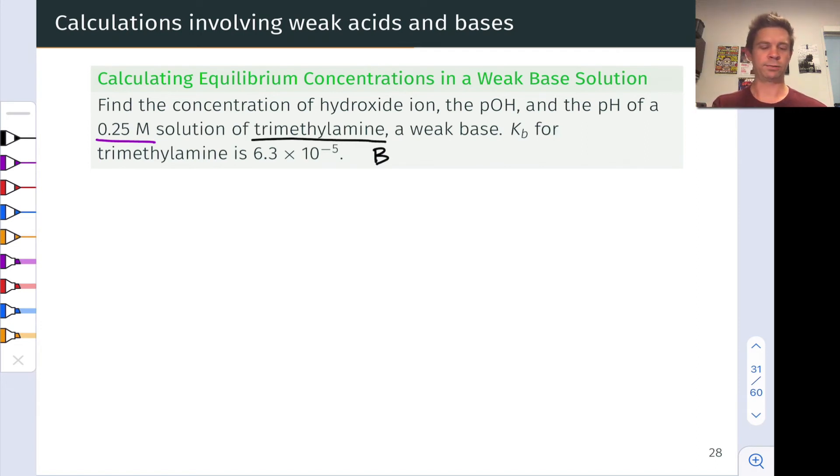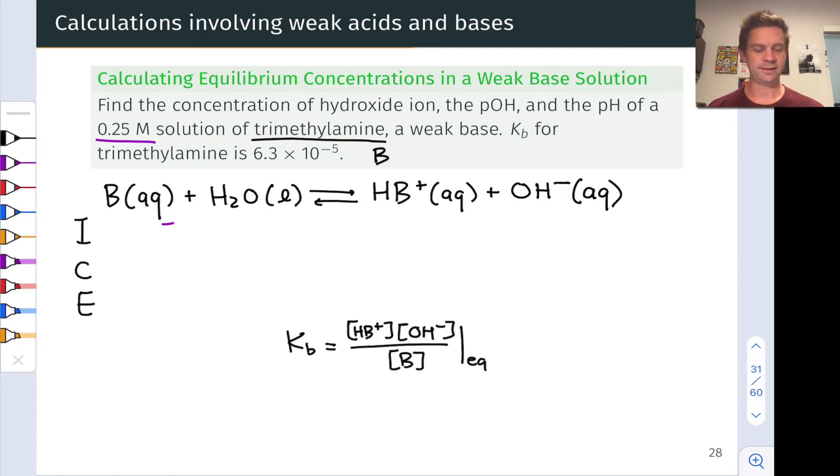To begin, we write the chemical equation for base ionization—reaction of the base with water—and fill in our initial conditions: 0.25 moles per liter of trimethylamine (the base), 0 of the conjugate acid, and 0 hydroxide.